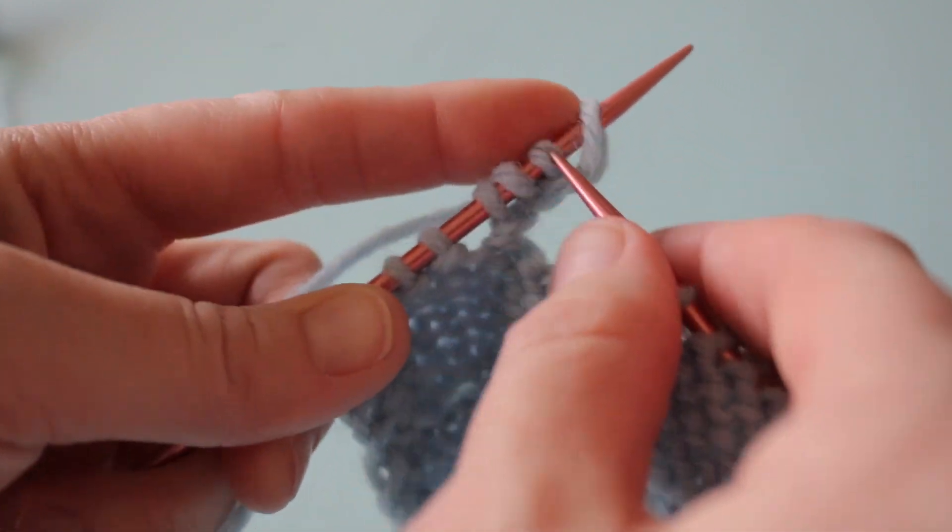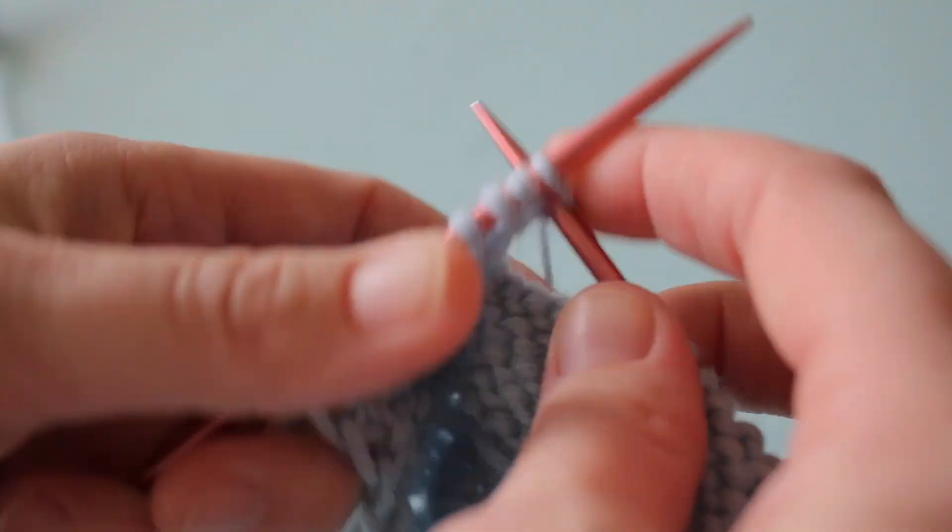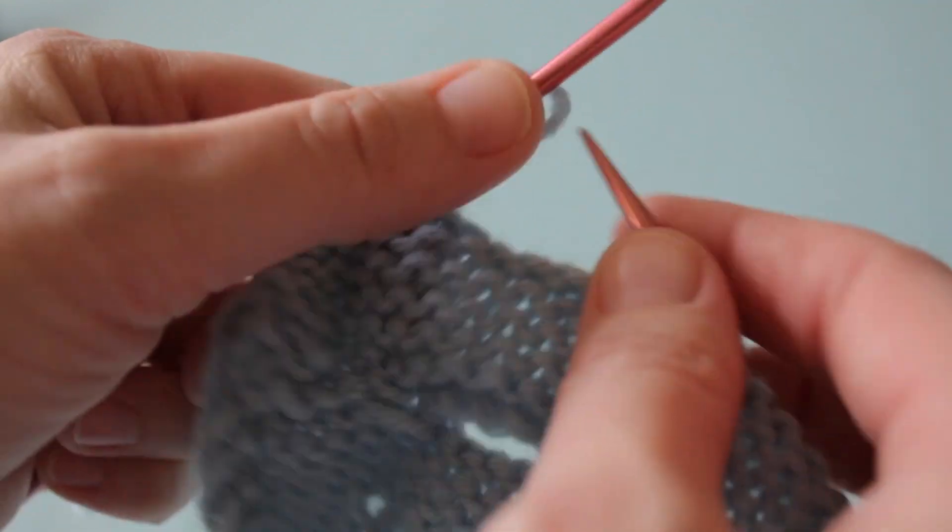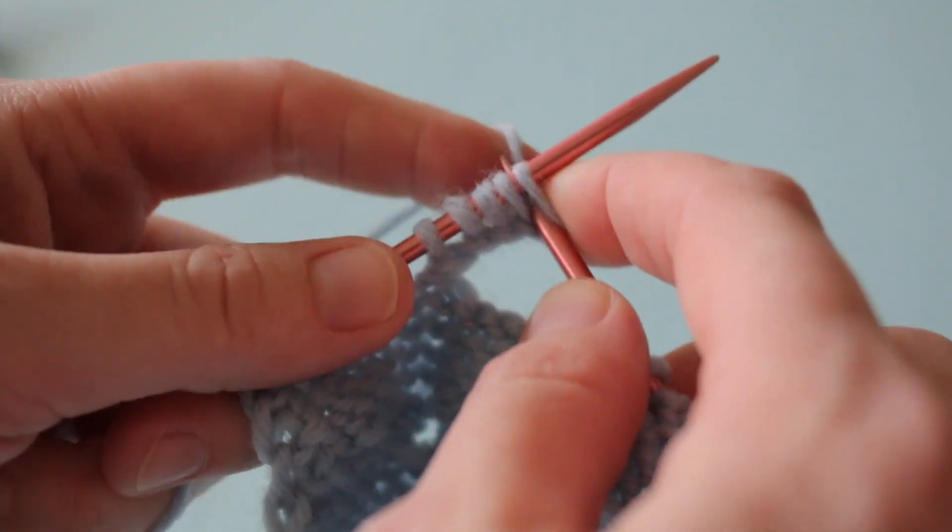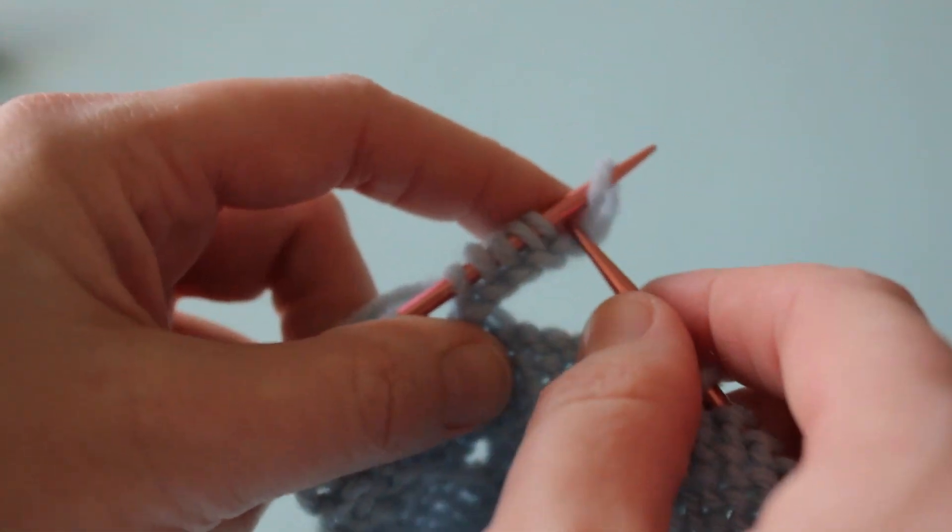You're going to need to cast on one more stitch than the number of stitches you bound off in the first part of the one-row buttonhole making process. For instance, if you bound off five stitches you're going to need to cast on six and in a moment you'll see why.